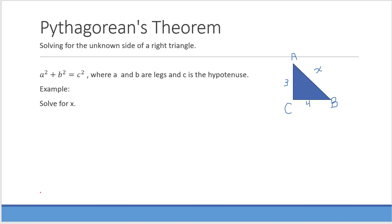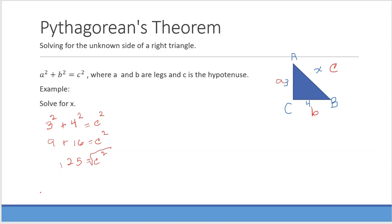Now we're going to look at the Pythagorean theorem, solving for the unknown side of a right triangle. The formula is a squared plus b squared equals c squared, where a and b are the legs and c is the hypotenuse. We have 3 squared plus 4 squared equals c squared: 9 plus 16 equals 25, so c squared equals 25. Taking the square root of both sides, c equals 5, so x equals 5.